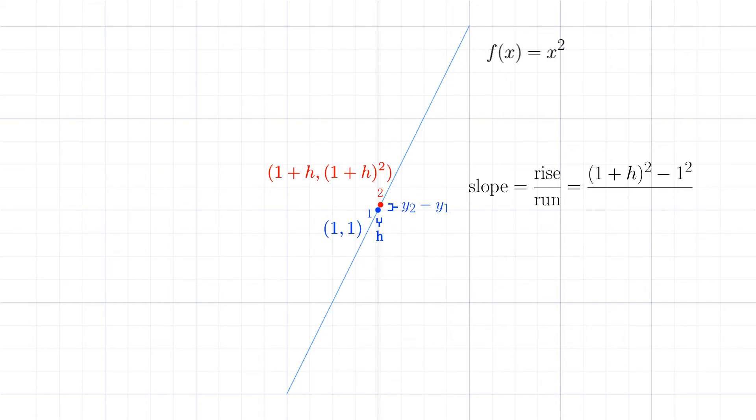Similarly, the horizontal distance is x2 minus x1, or (1 plus h) minus 1. So the slope is equal to [(1 plus h) squared minus 1 squared] divided by [(1 plus h) minus 1].